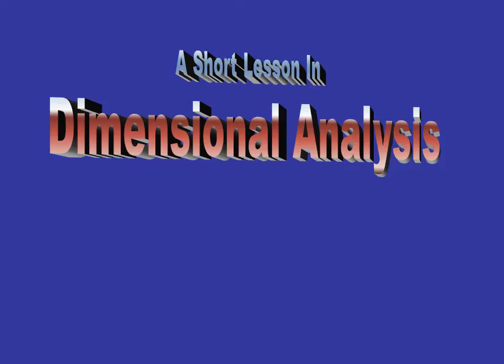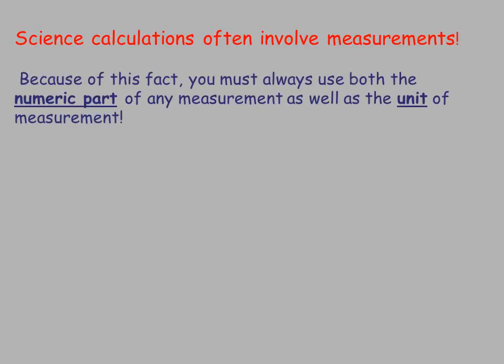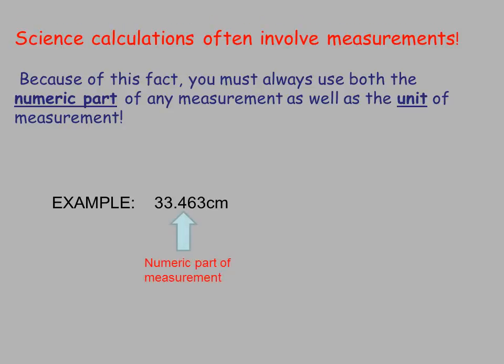This is a short video lesson in dimensional analysis. Science calculations often involve measurements. Because of this fact, you must always use both the numeric part of any measurement as well as the unit of the measurement. Here's an example: 33.463 centimeters. The numeric part of the measurement is 33.463, but that number also comes with a unit of measurement, which is centimeters, and you can't use one without the other.